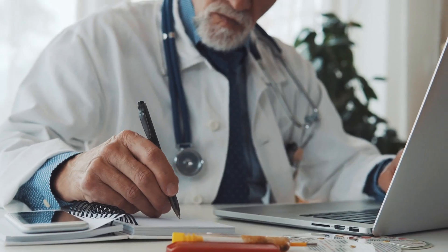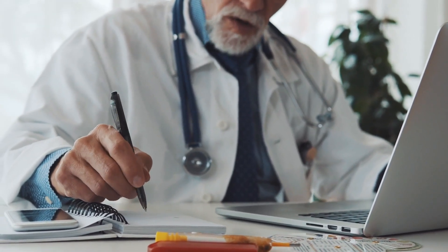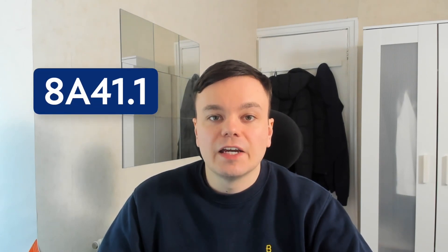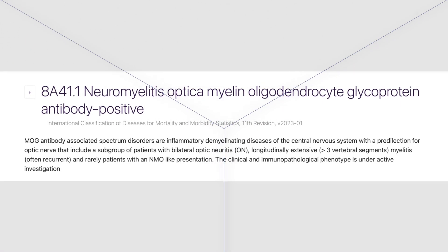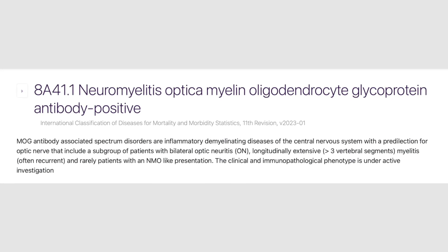MOG antibody disease now has its own unique code, which makes it easier for healthcare providers to identify, document, and treat this condition correctly. The code for MOG antibody disease is 8a41.1, and the official description for the code is 'neuromyelitis optica, myelin oligodendrocyte glycoprotein antibody positive.'